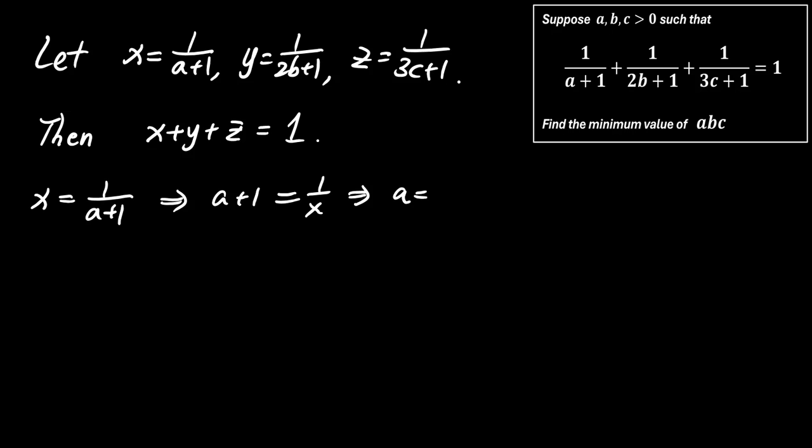From X equals 1 over a plus 1, we get a equals 1 minus X divided by X, which simplifies to Y plus Z divided by X.